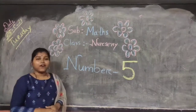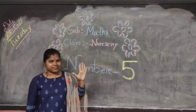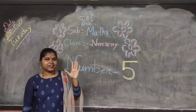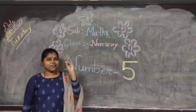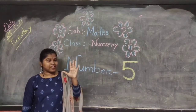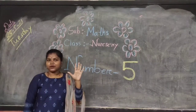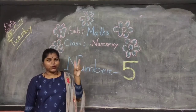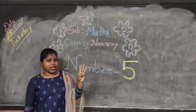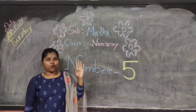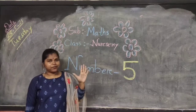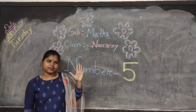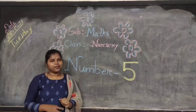5 fingers. 5 fingers. Let's count: 1, 2, 3, 4, 5. 5 fingers. Okay?